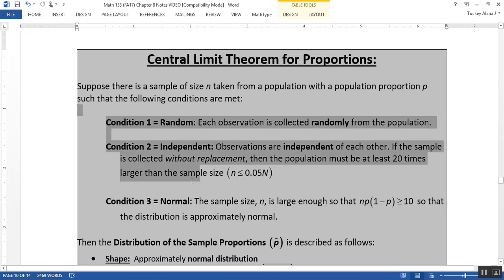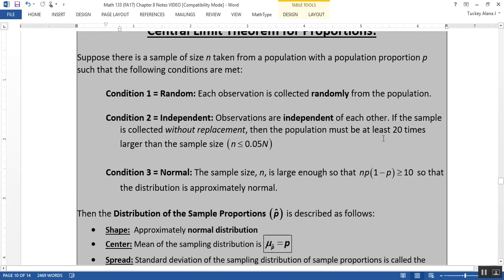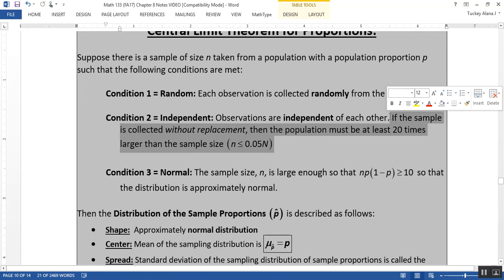If you have the following conditions met: condition one, each observation is random; condition two, the observations are independent of each other; and there's that same issue from section 8.1 - if the sample is collected without replacement, the population must be at least 20 times larger than the sample size.